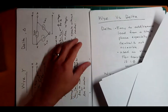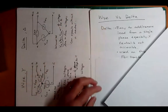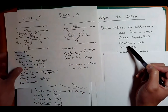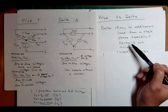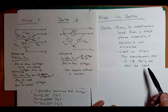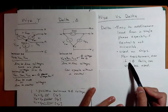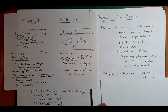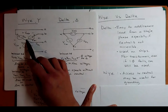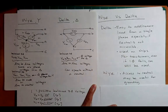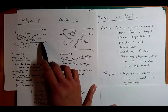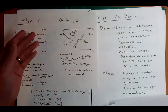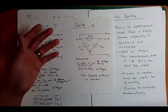Comparing Y versus delta: for delta, it's easy to add and remove load from a single phase, especially if the neutral is not accessible. On three-phase transformers, the nice thing about a delta-to-delta transformer is that if one phase fails, you still get three-phase voltage and current — some redundancy. A Y configuration might be nice because you can access the neutral for grounding, and the Y is also easier to analyze mathematically.